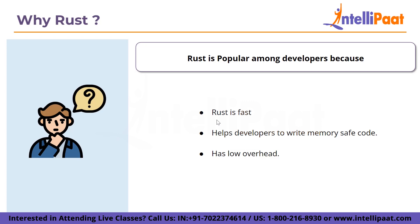Unlike C, Rust does not support unsafe memory operations such as dangling pointers, uninitialized pointers, and null pointers. Rust also has low overhead. All values in the Rust programming language have a unique owner, and the scope of the value is the same as the scope of the owner — that is why it has the ownership system.